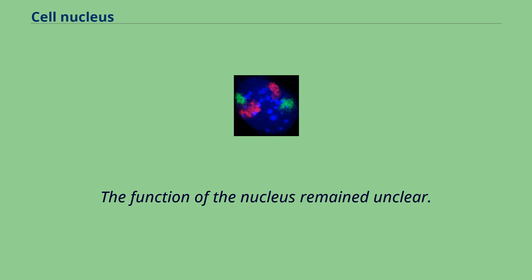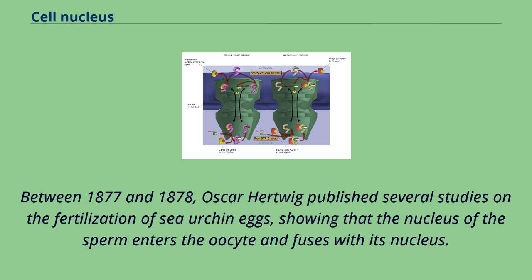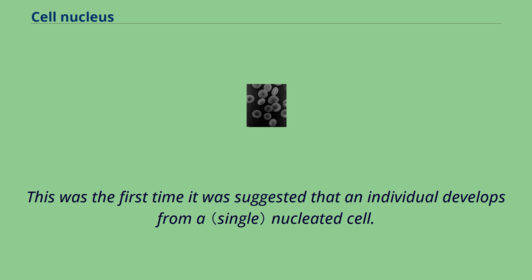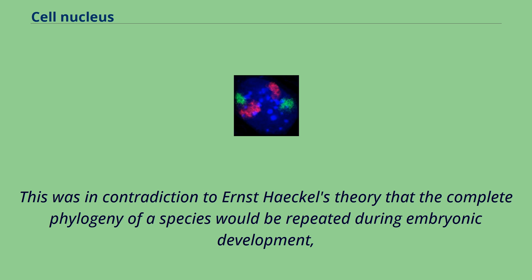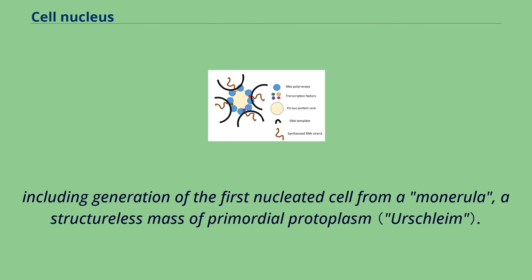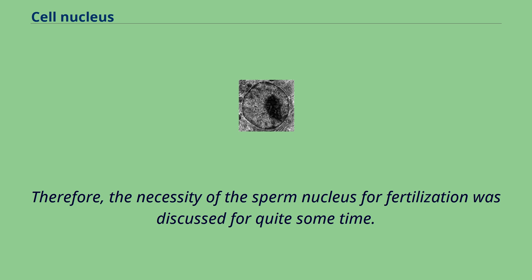Between 1877 and 1878, Oscar Hertwig published several studies on the fertilization of sea urchin eggs, showing that the nucleus of the sperm enters the oocyte and fuses with its nucleus. This was the first time it was suggested that an individual develops from a nucleated cell. This was in contradiction to Ernst Haeckel's theory that the complete phylogeny of a species would be repeated during embryonic development, including generation of the first nucleated cell from a morula, a structureless mass of primordial protoplasm. Therefore, the necessity of the sperm nucleus for fertilization was discussed for quite some time. However, Hertwig confirmed his observation in other animal groups including amphibians and mollusks. Edward Strasburger produced the same results for plants in 1884.